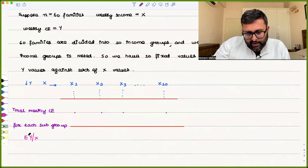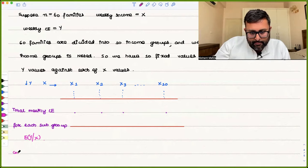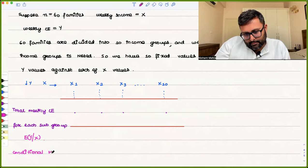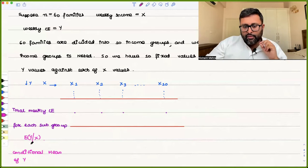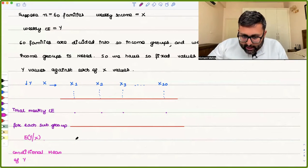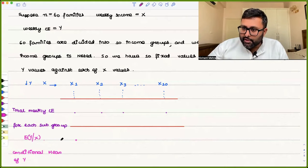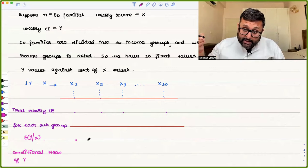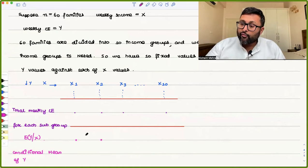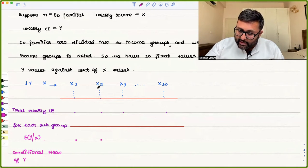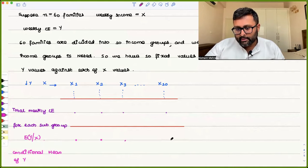What you get is E(Y | X) — this is the conditional mean of Y. We call it the conditional mean because you are calculating it conditioned upon a specific income group. For X1, you get the conditional mean of weekly consumption expenditure for income group X1; for X2, you get the conditional mean conditioned upon X2, and so on.